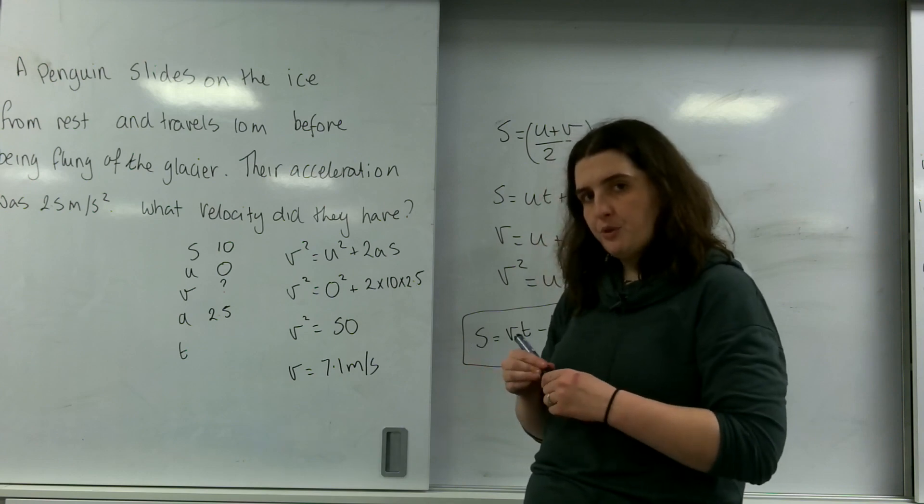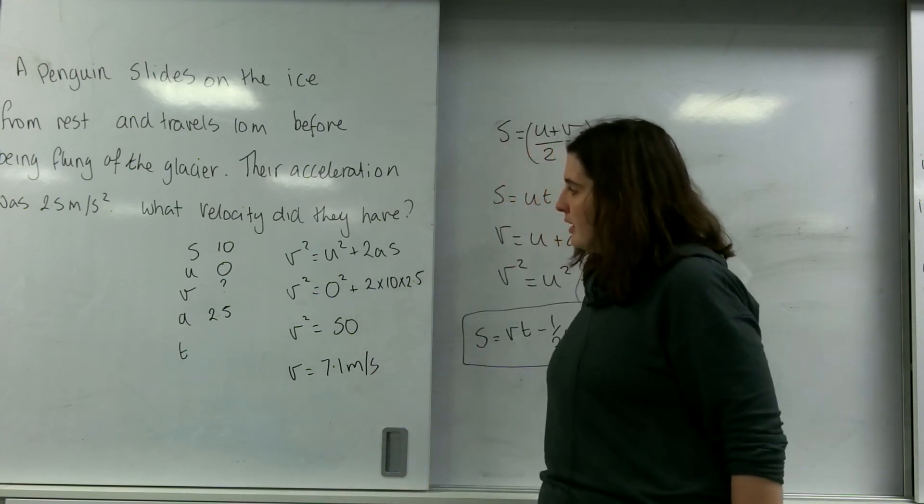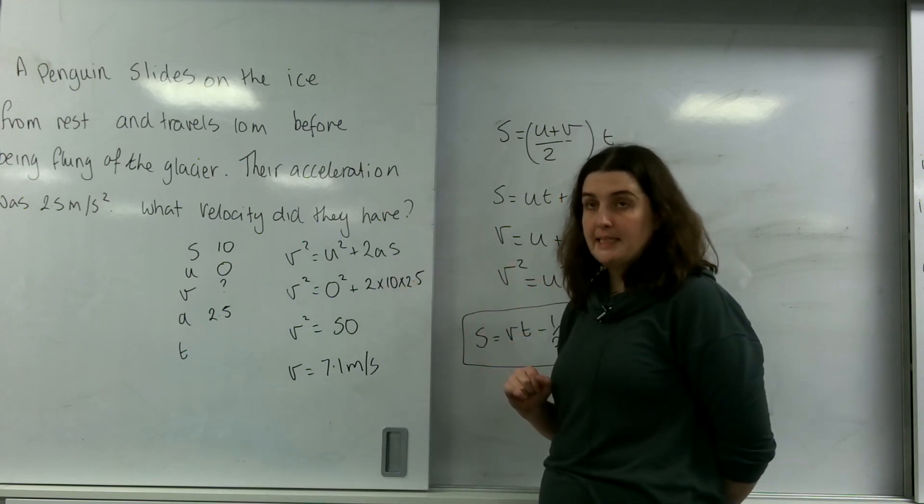You can't leave root 50 for this one. You must, must, must put the actual value in decimal points. So 7.1 metres per second. This penguin is being flung off the glacier.